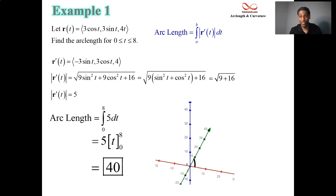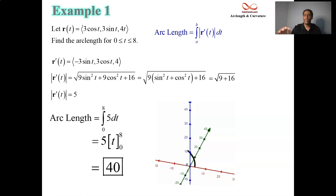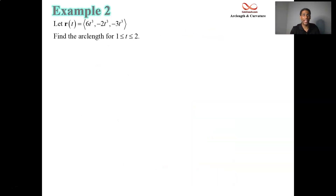Here's the animation for this particular function. Starting at t equals 0 and ending at t equals 8, the last component is 4t, so you're at z equals 32 when done. The distance traveled is equal to 40.